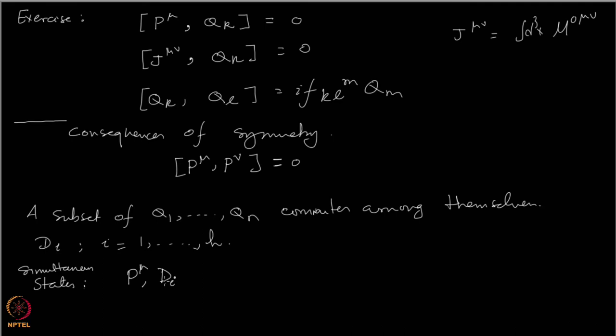One important point: the commutator of J_mu_nu with P_mu is not zero, because P_mu is a vector and transforms like a vector. So you can only use the P's and the Q's (the internal symmetry charges) to label the states, as these are the only operators you can simultaneously diagonalize.